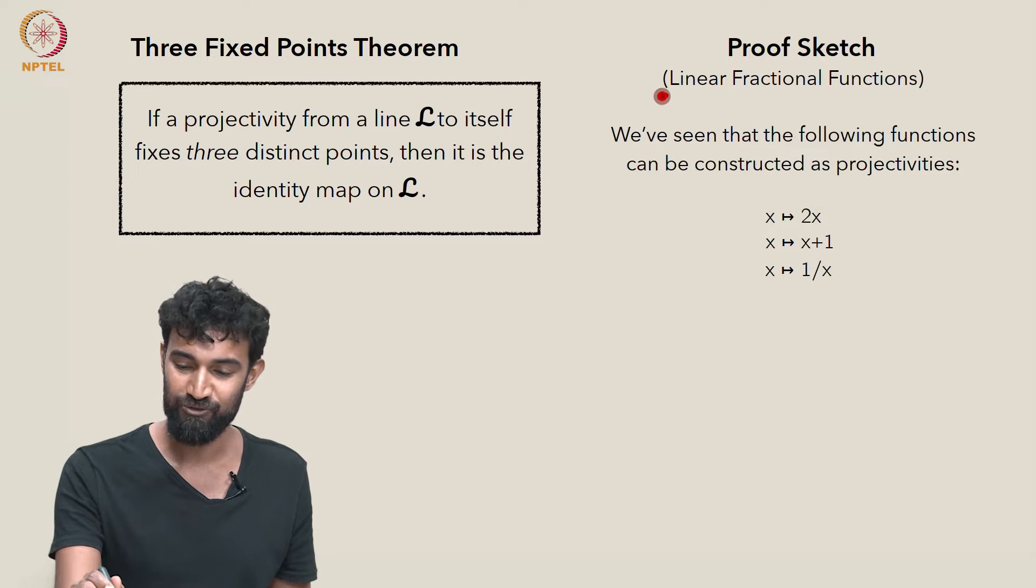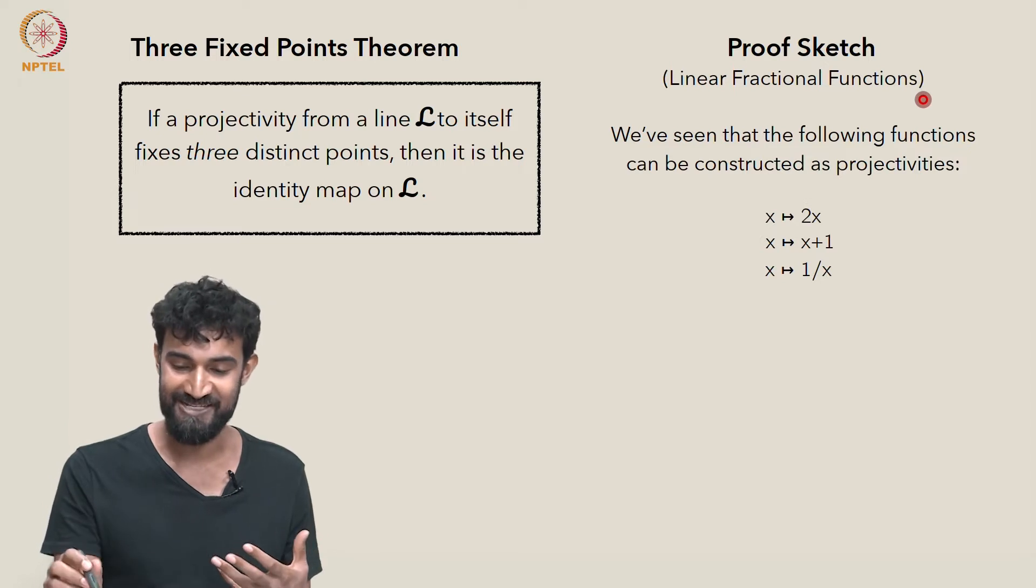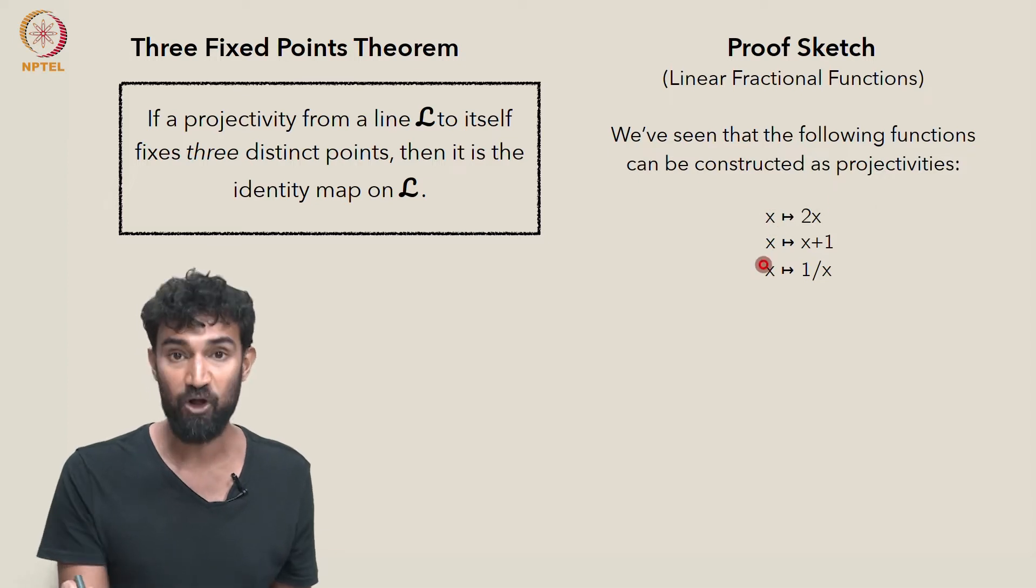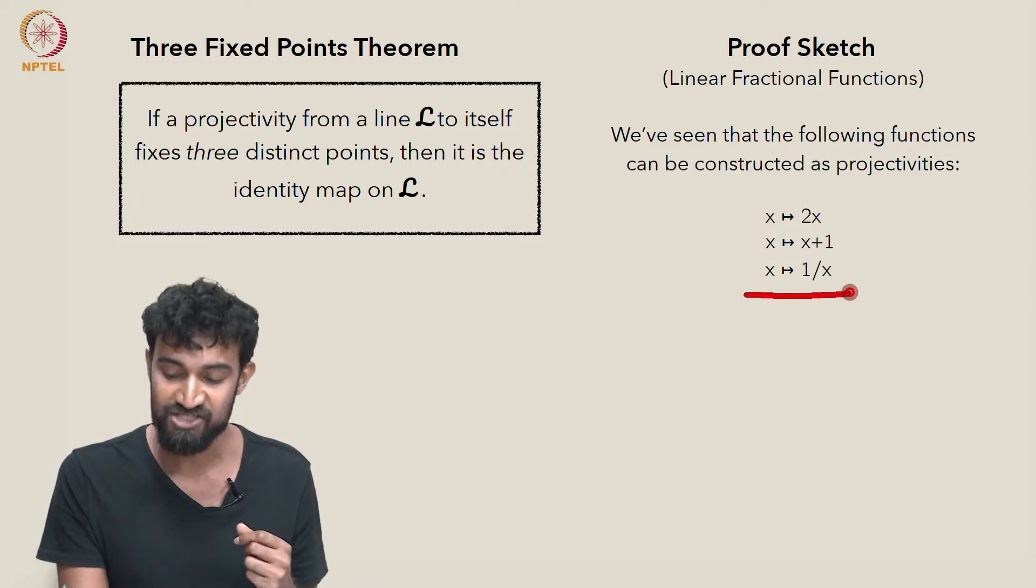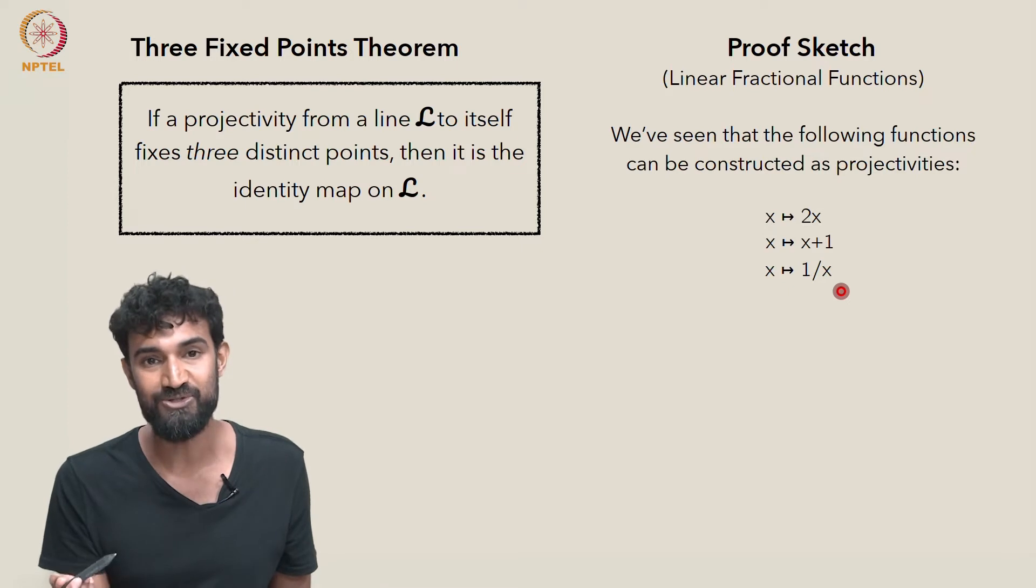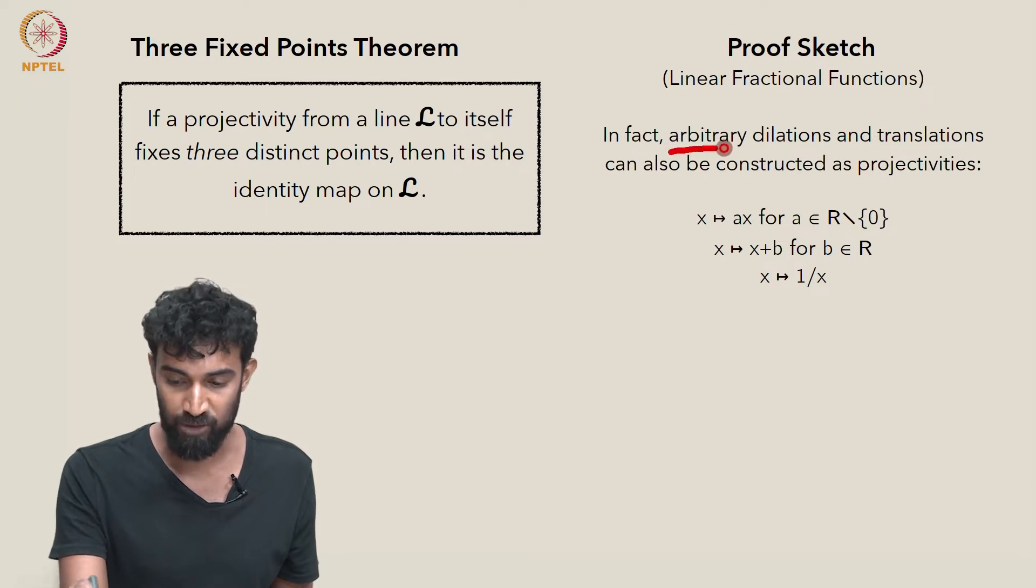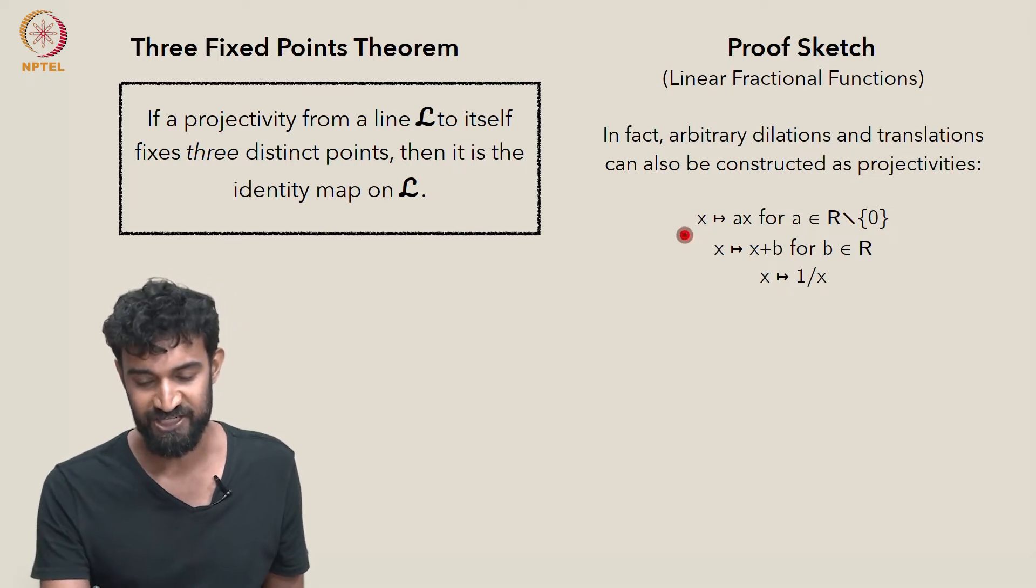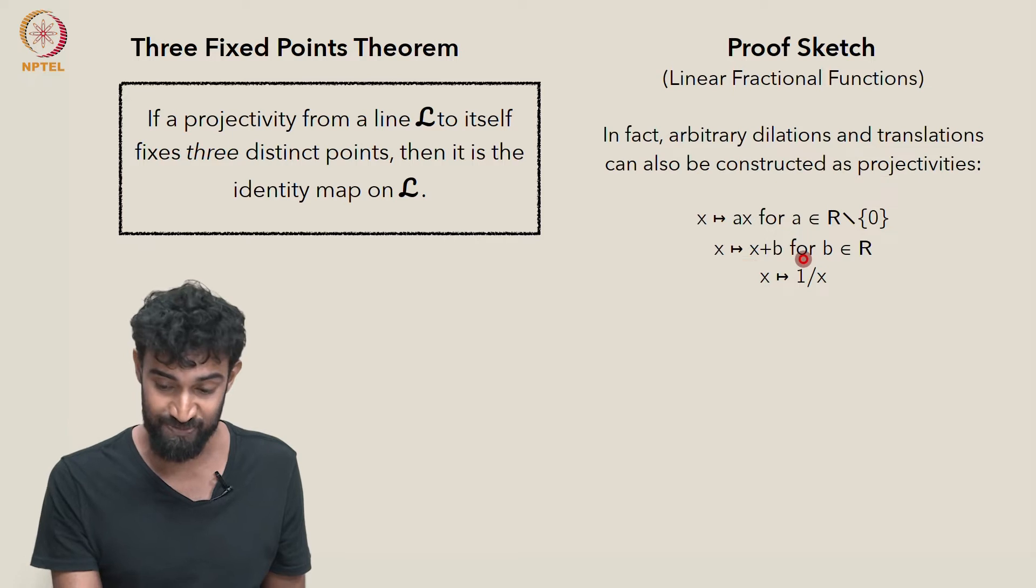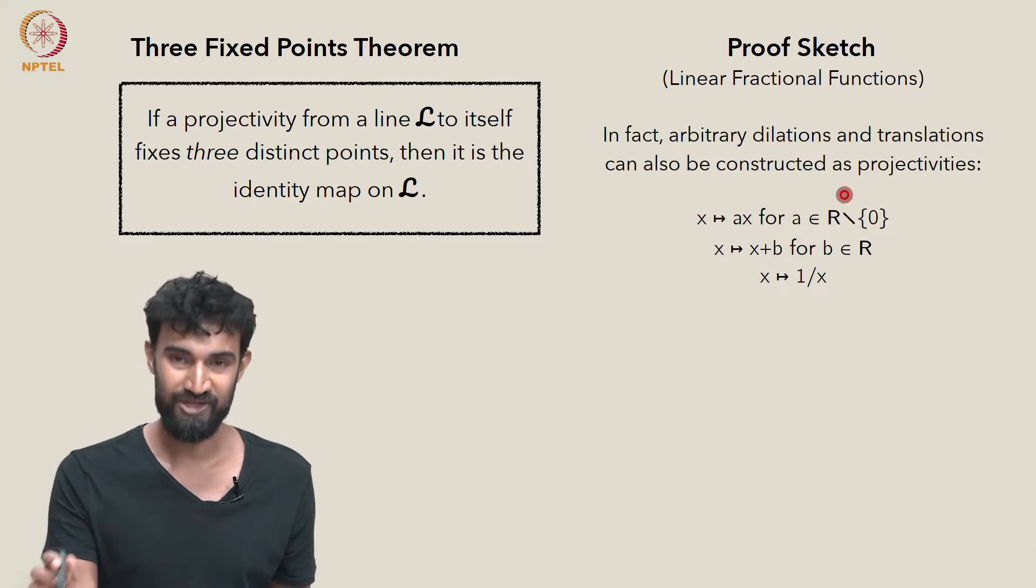But today, we're going to do a proof based on linear fractional functions. And don't worry if you don't know what that means, I'm going to define it in a second. But first, I want to just refresh our memory. We've seen the following functions as projectivities: x goes to 2x, x goes to x plus 1, and x goes to 1 over x. And as an exercise, I wanted you to check that arbitrary dilations and translations can also be constructed as projectivities. In particular, x goes to ax, x goes to x plus b, and x goes to 1 over x.